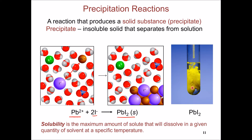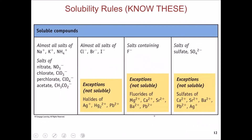Whether a precipitate will form in a combination of solutions depends on the solubility of the substance. Solubility means the maximum amount of a salt that can dissolve in a unit volume of solvent at a certain temperature. There are solubility rules that allow you to predict whether a certain combination of ions is going to be soluble or insoluble, and in turn predict if a precipitation reaction is going to take place.